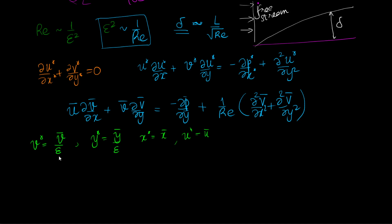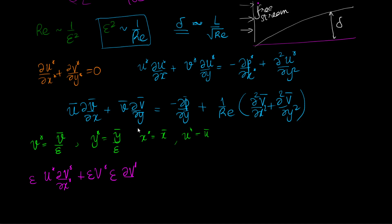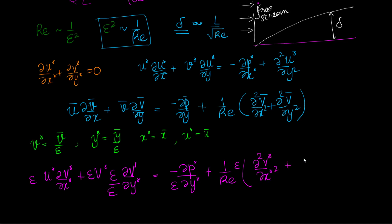Let us modify this equation. It becomes: U* epsilon del V*/del X* + V* (with one epsilon from this, and one epsilon from the other term). This will be equal to minus del V* upon epsilon del Y* plus 1/Re times (one epsilon from del² V*/del X*² plus 1/epsilon² del² V*/del Y*²).